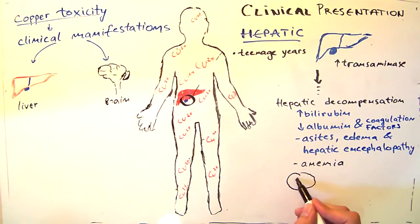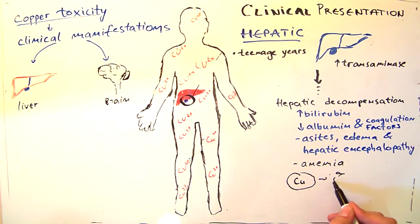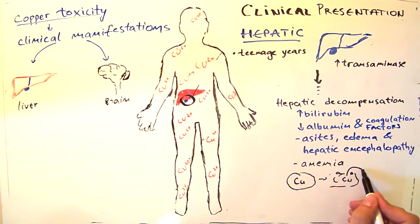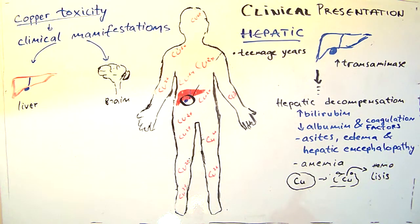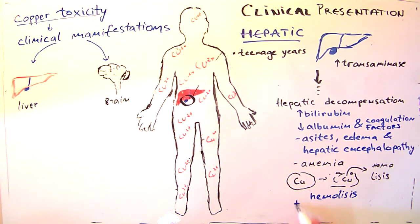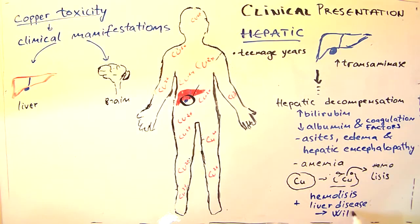Because of the hepatocellular necrosis, copper is released from the cells of the liver into the bloodstream. There occurs hemolysis, or the lysis of the red blood cells. So whenever we have hemolysis and liver disease presented in a patient, we should think about Wilson's disease.